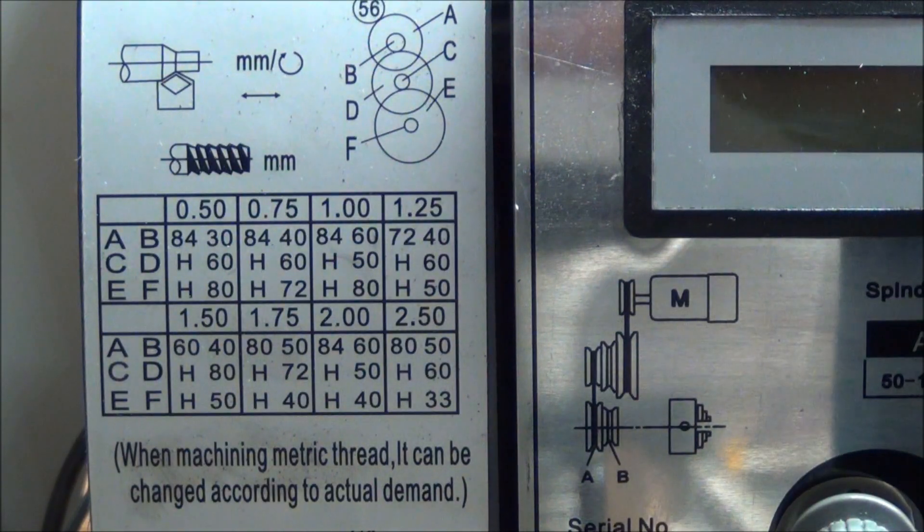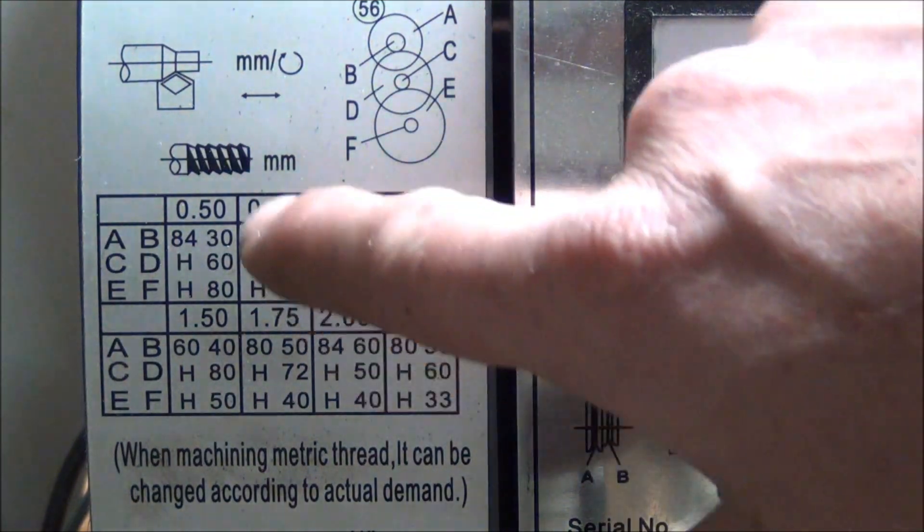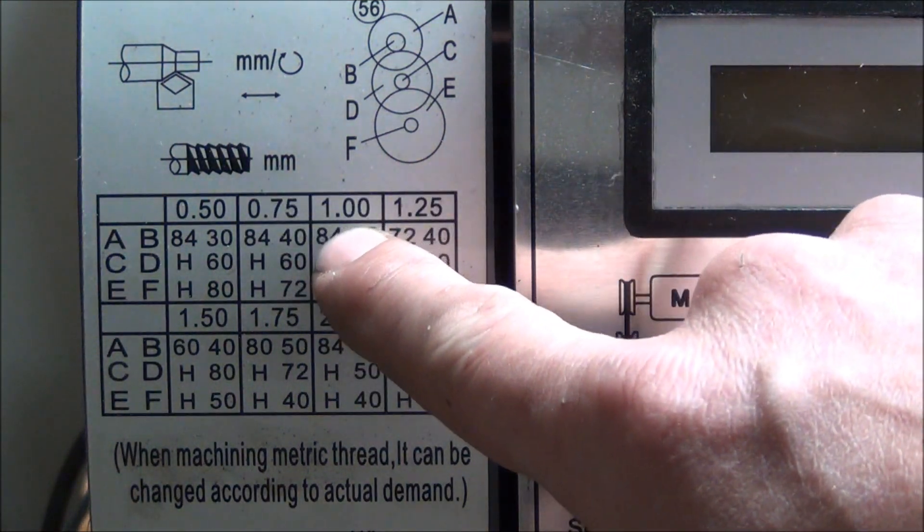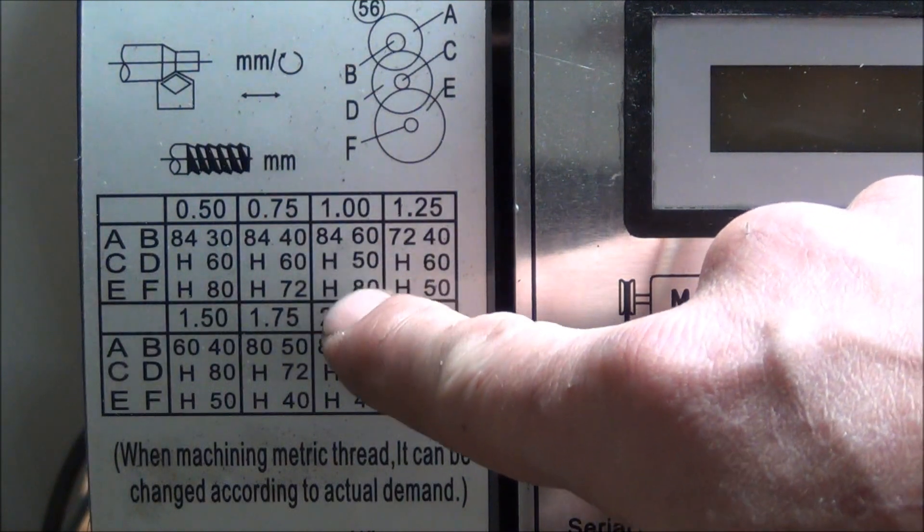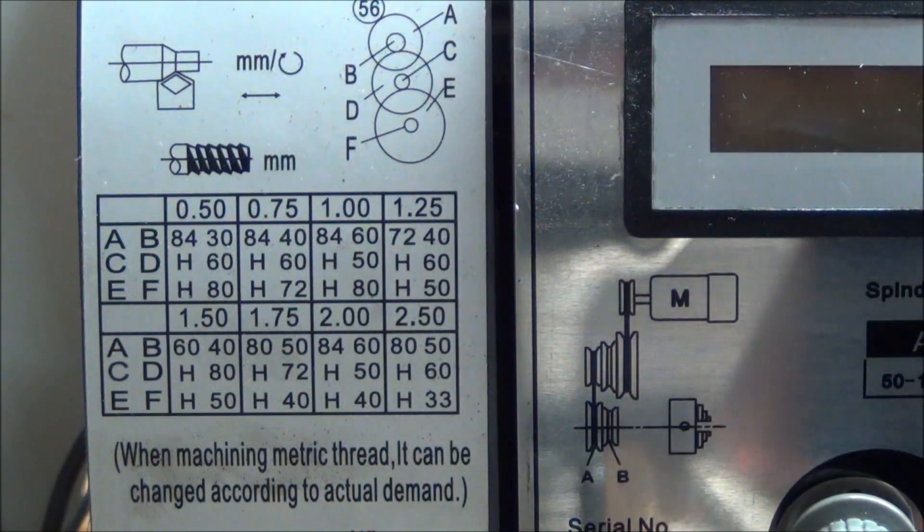As you can see here from the threading chart that's on the machine, for one millimeter thread pitch, we're going to need an 84, 60, 50, and 80 tooth gear.